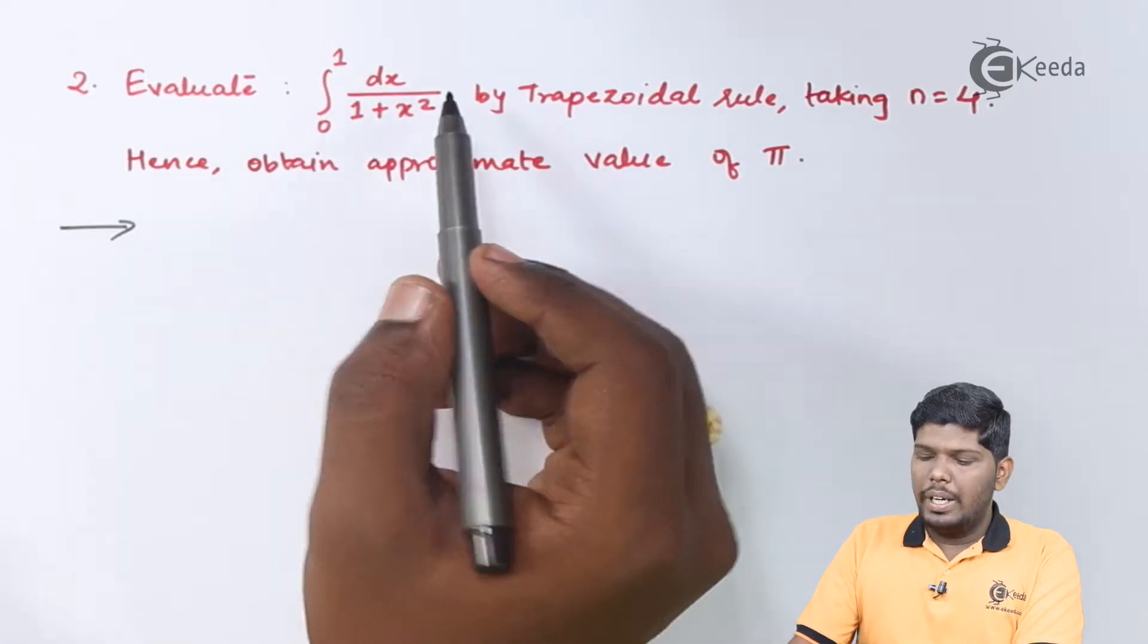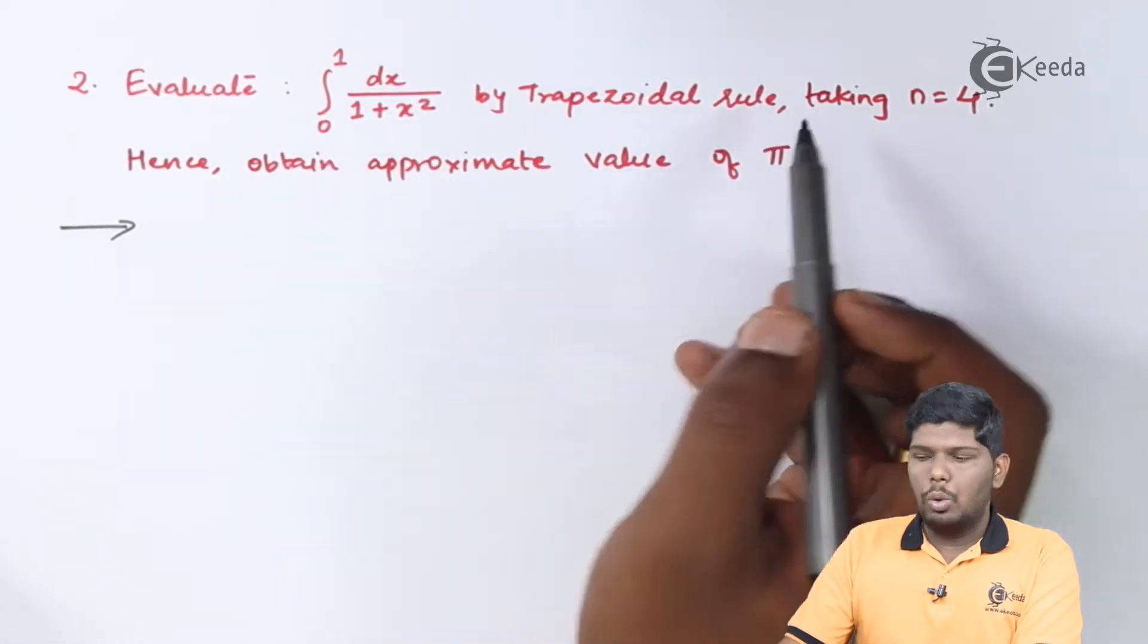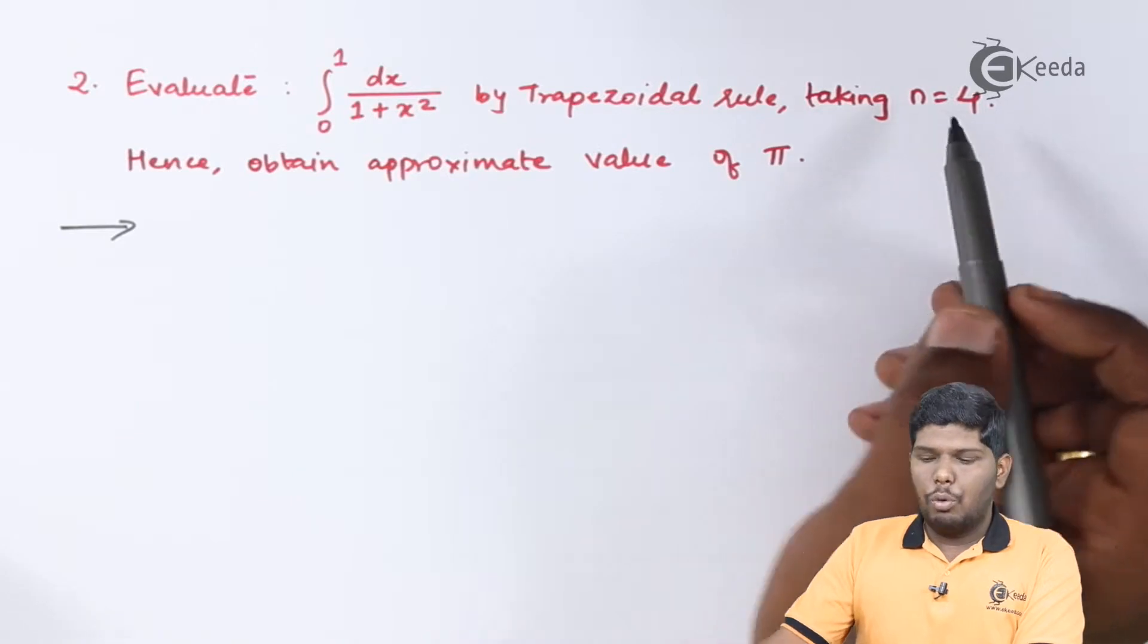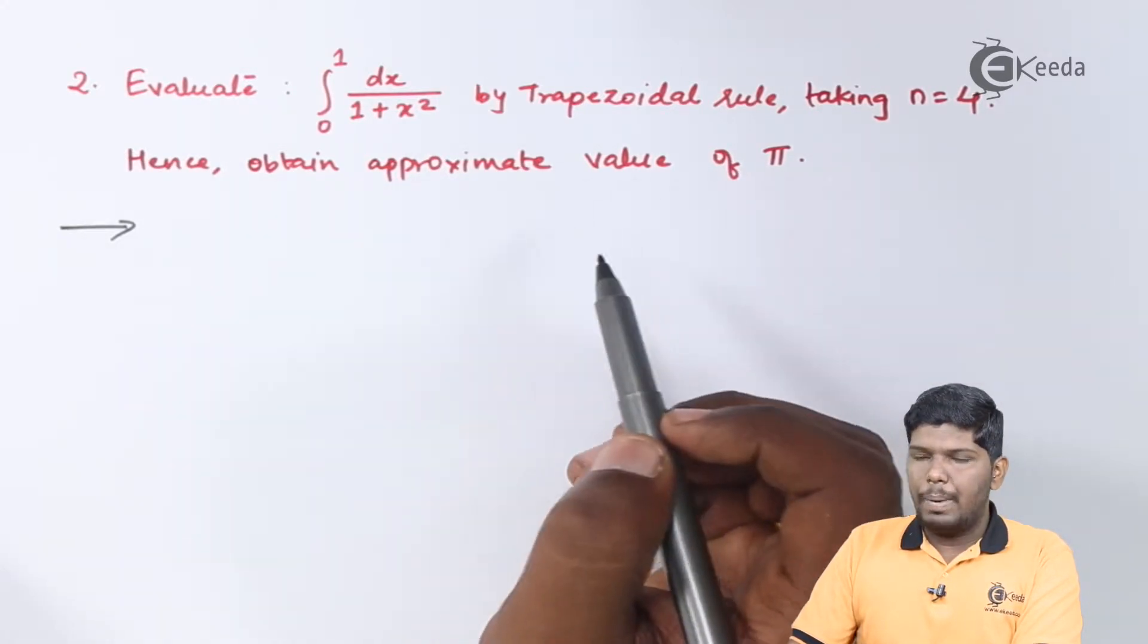Evaluate the integral from 0 to 1 of dx over 1 plus x squared by trapezoidal rule, taking n equals 4. Hence, obtain approximate value of pi.